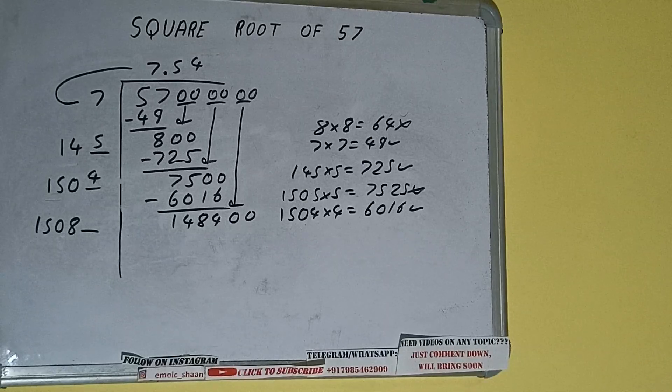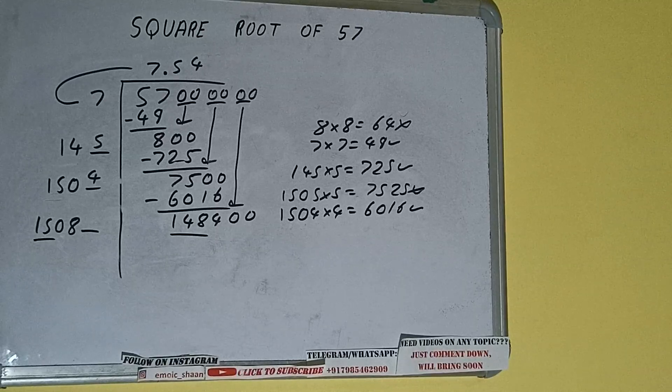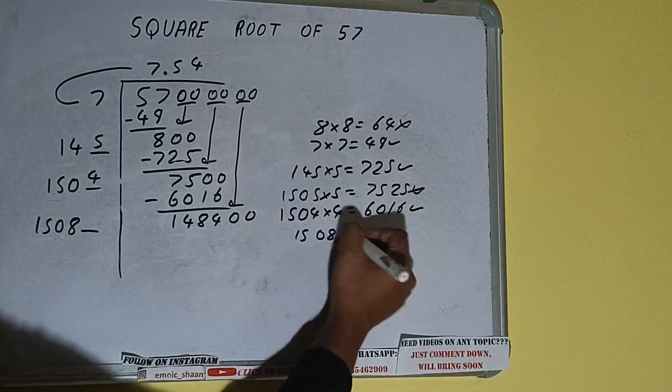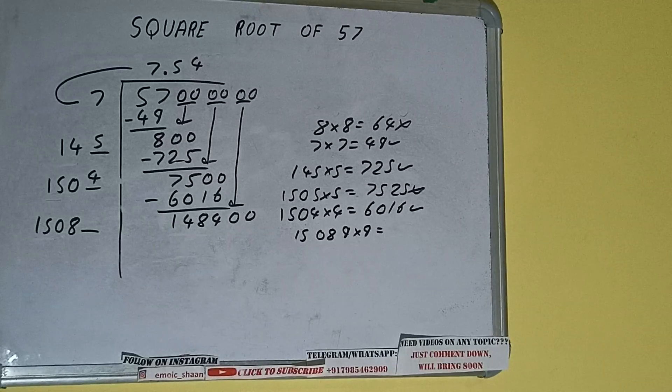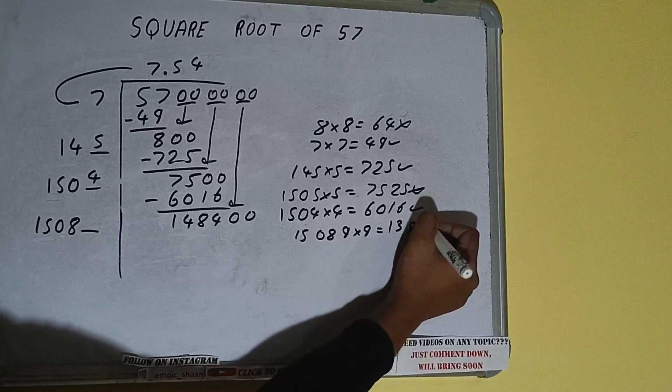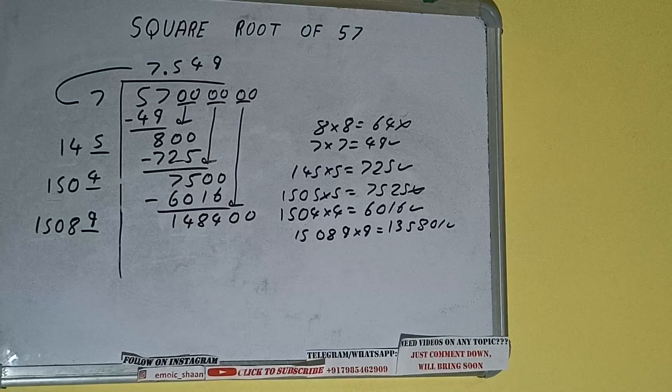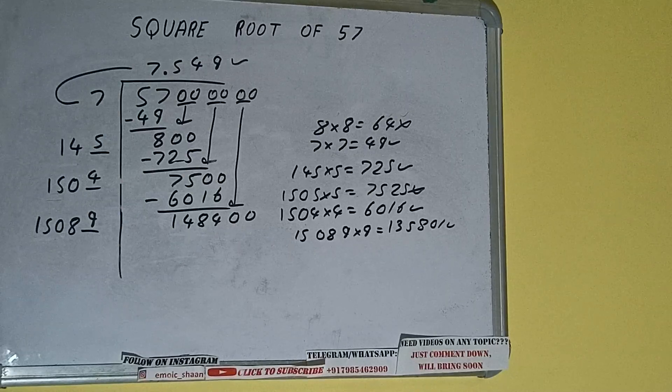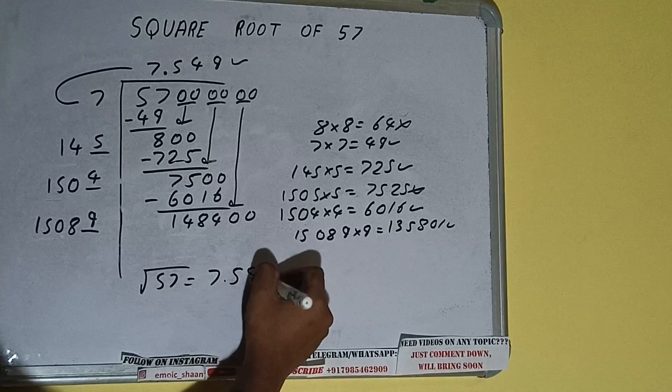Now compare this 15 with this 150. So 15 times 9 we can try: 15089 into 9 we can try, and we'll be having 135801, which is good to take. So 9 here and 9 here, but we don't need to calculate because we got the answer correct up to 3 decimal places. So square root of 57 will be 7.549. That will be the answer.